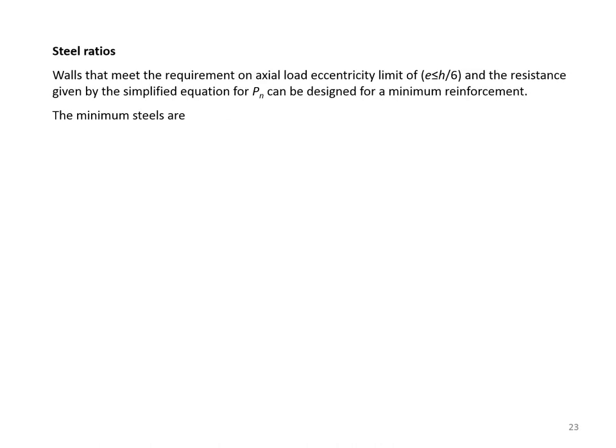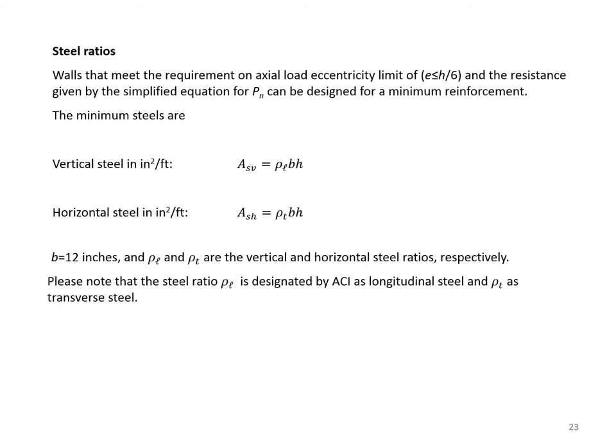Steel ratios: walls that meet the eccentricity limit of e ≤ h/6 can be designed for minimum reinforcement. Vertical steel ASV = ρL × B × h, and horizontal steel ASH = ρT × B × h, where B = 12 inches. ρL and ρT are the vertical and horizontal steel ratios respectively—ACI designates ρL as longitudinal steel and ρT as transverse steel.